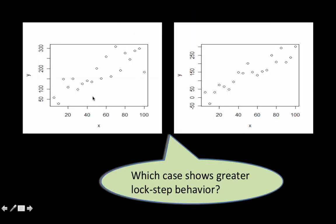So that's what we mean by relationships: to what extent does y increase when x increases, and to what extent are x and y marching together? Let's consider two cases of x and y. In which of these two graphs do you see x and y marching together to a much greater extent — in which one is there more lockstep behavior? Clearly, the points on the right-hand side are much more tightly clustered around an imaginary line. You will find that all these points are much closer to that imaginary line than the points in the other chart. So you would say the second chart exhibits greater lockstep behavior.